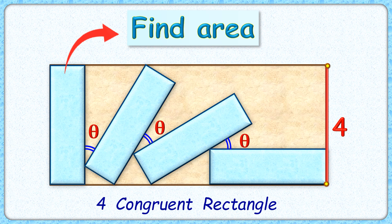Let's check this interesting question. We have four congruent rectangles fitted inside a bigger rectangle with width 4 centimeters. The angle between consecutive rectangles is the same, theta degrees. The exciting part is, with this limited data, we have to find the area of each congruent rectangle.